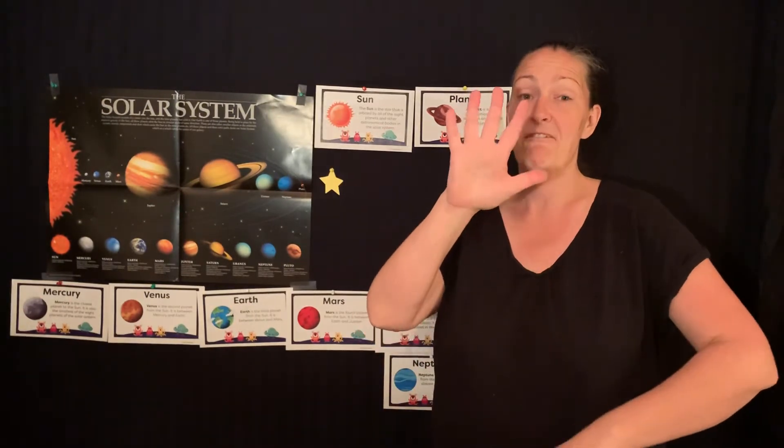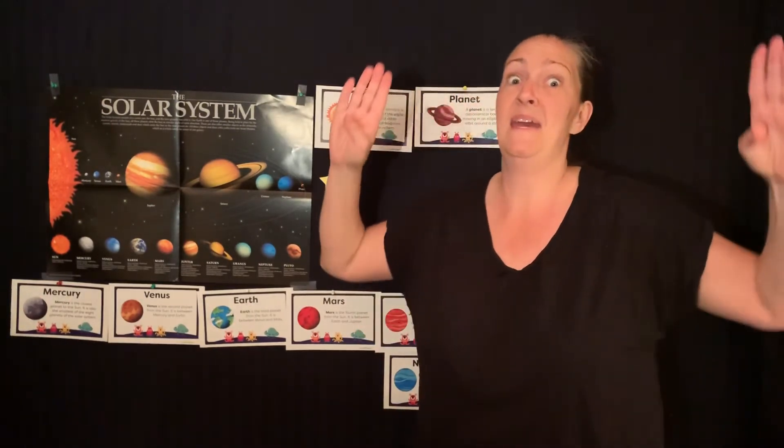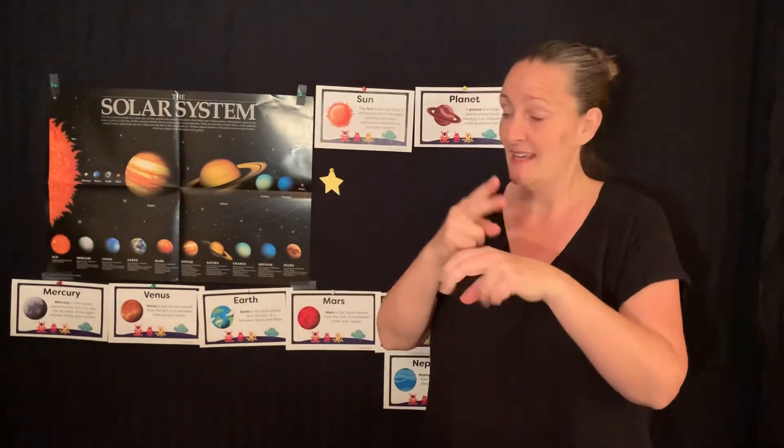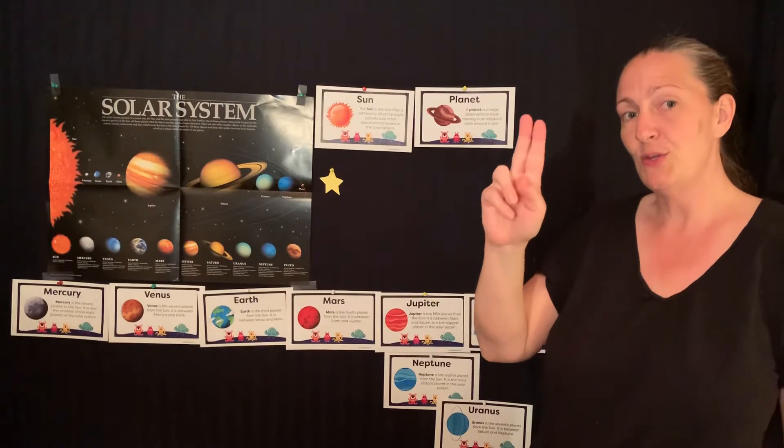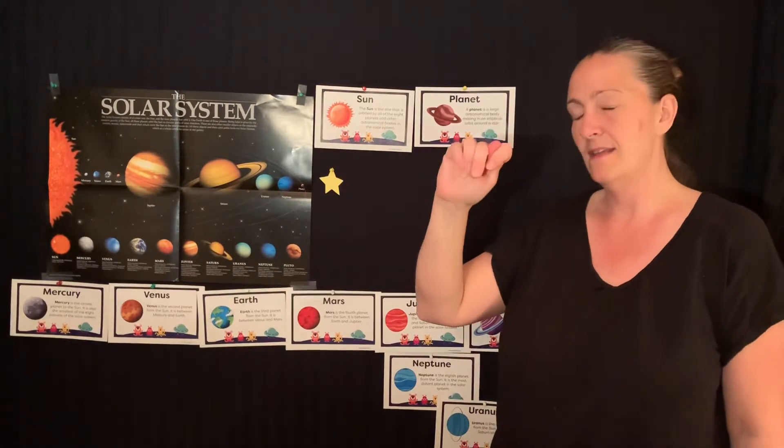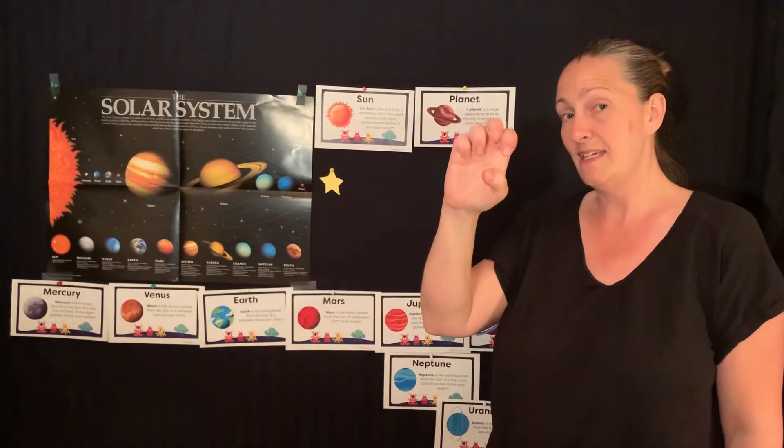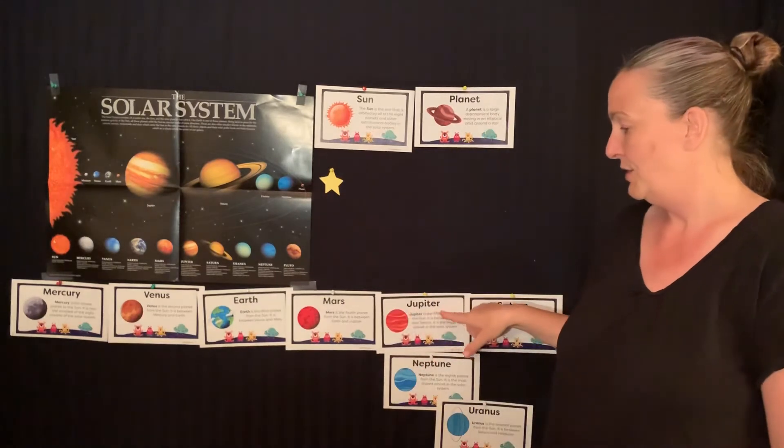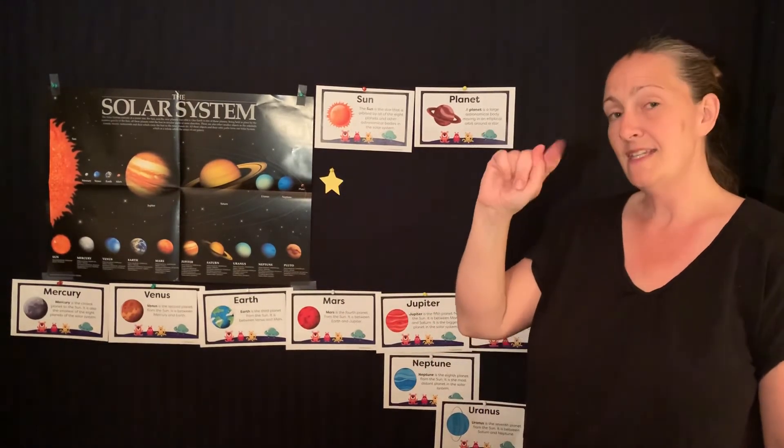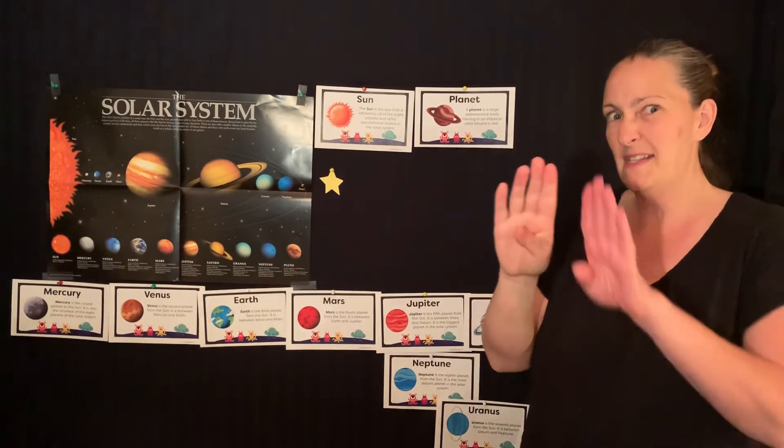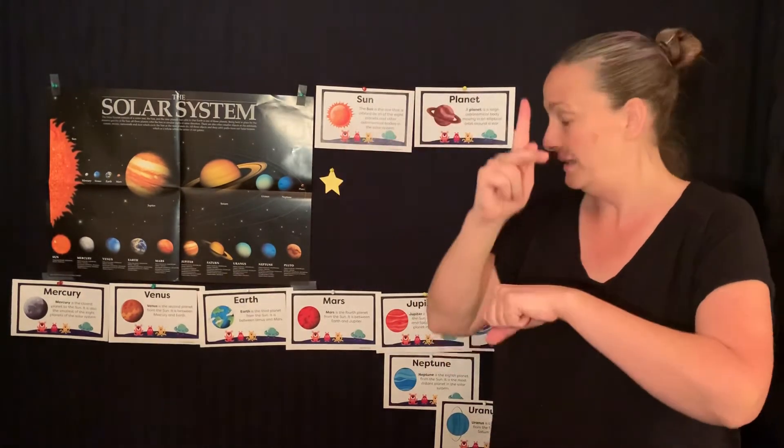Number five is a big planet. And its name is J-U-P-I-T-E-R. Jupiter. It's a big planet.